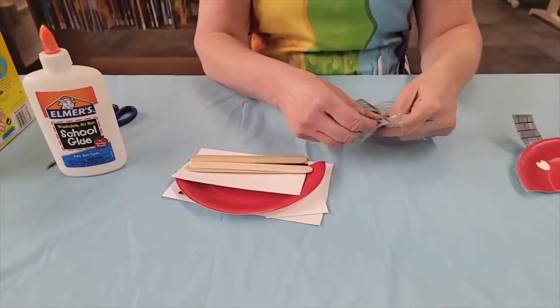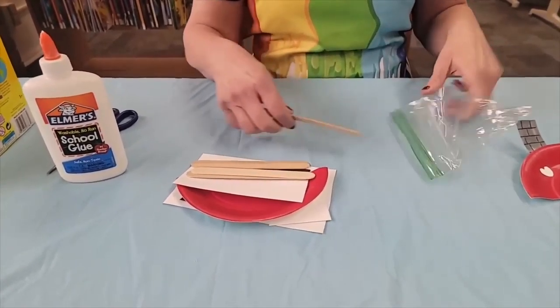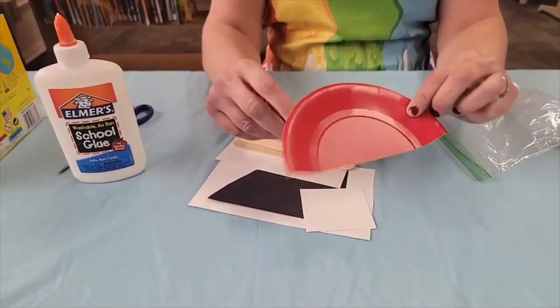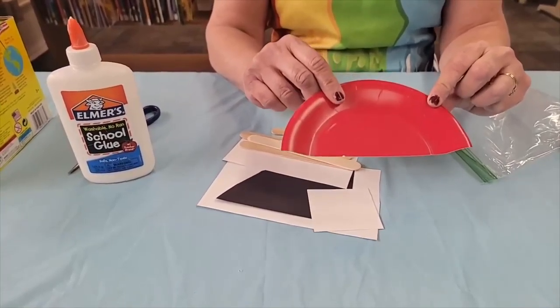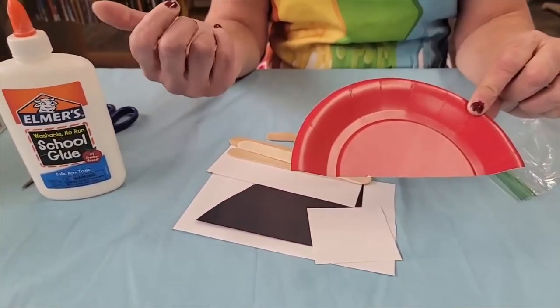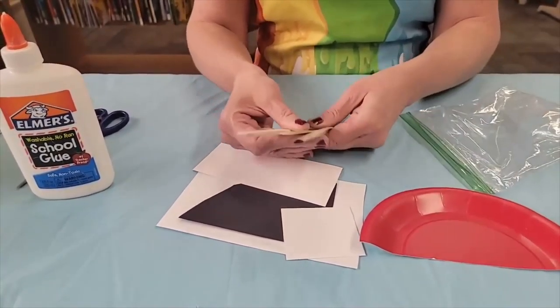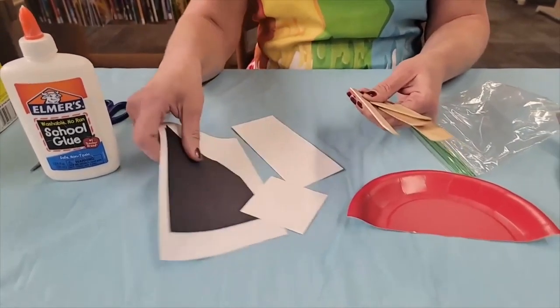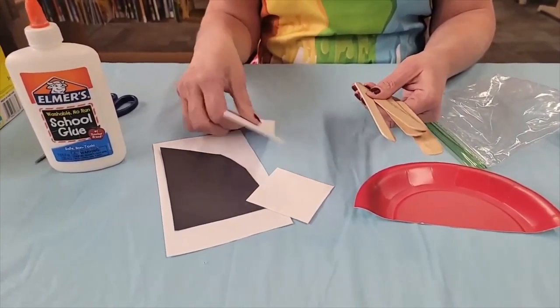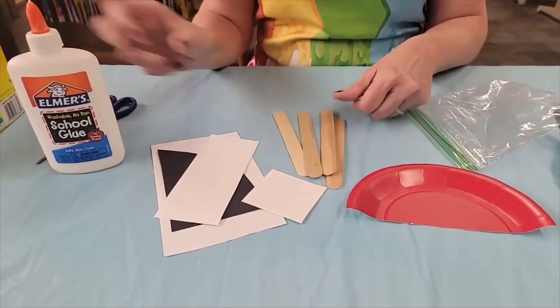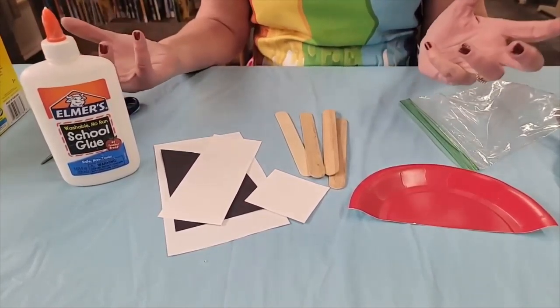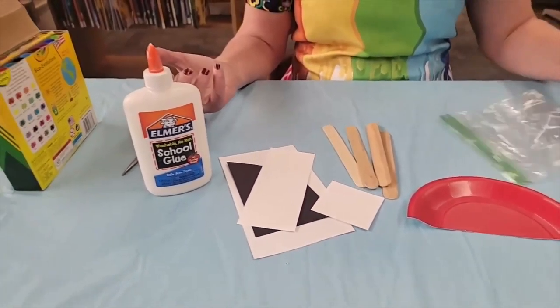It is a fairly easy craft. You just need half of a paper plate, and I have red already, so if you don't have red paper plates you can just paint it or color it with a marker. You need some large craft sticks and then some construction paper, black and white. You also need glue, scissors, and markers. That's all you need today to make this cute little mushroom house.